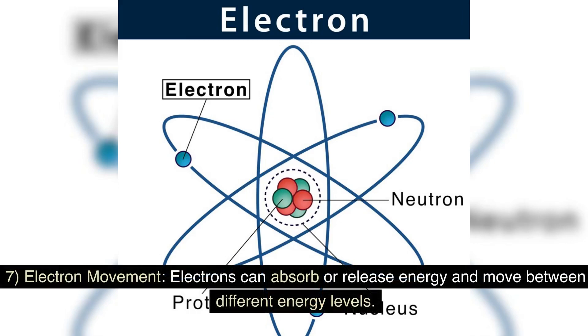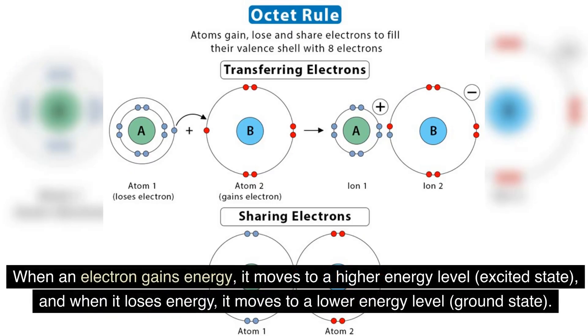Electron movement: electrons can absorb or release energy and move between different energy levels. When an electron gains energy, it moves to a higher energy level (excited state), and when it loses energy, it moves to a lower energy level (ground state).